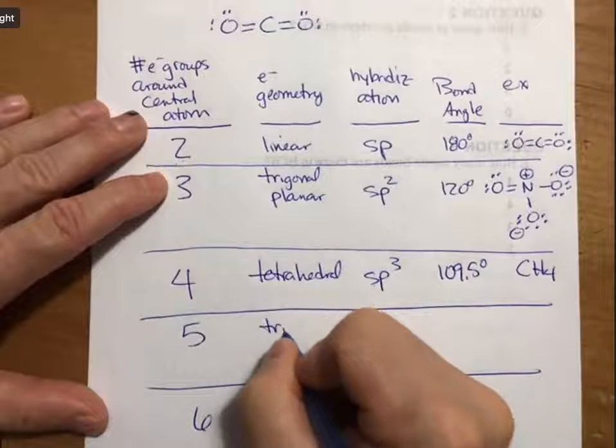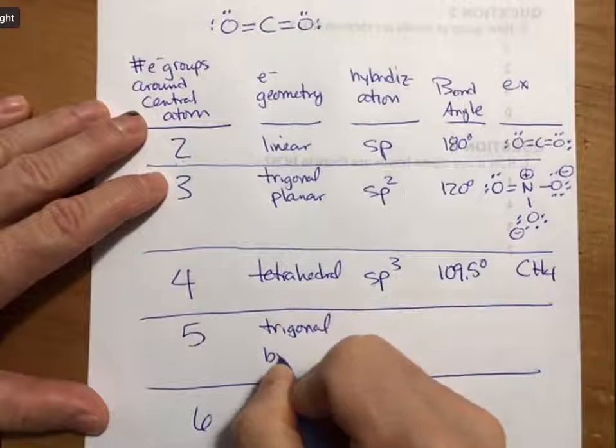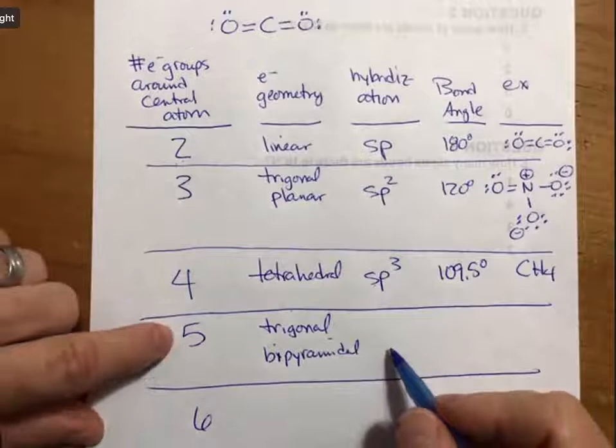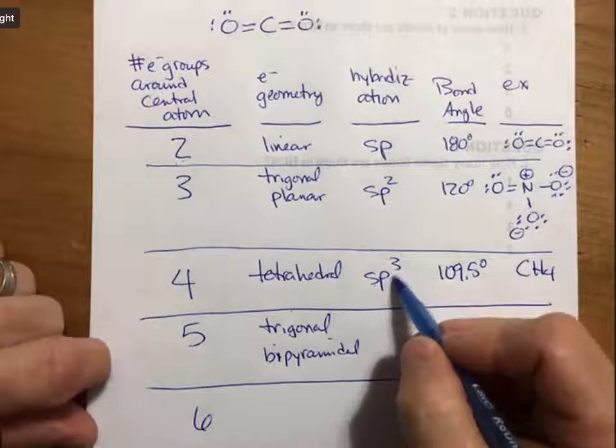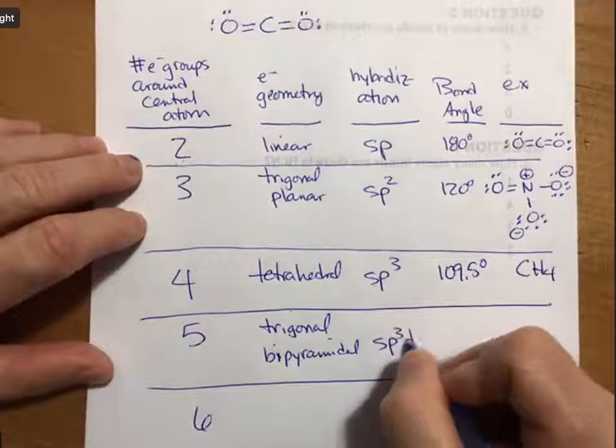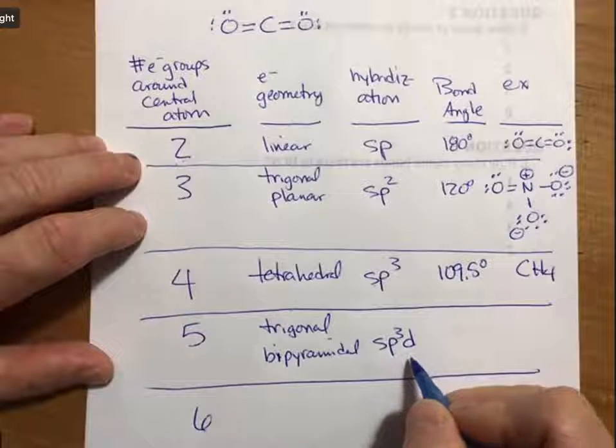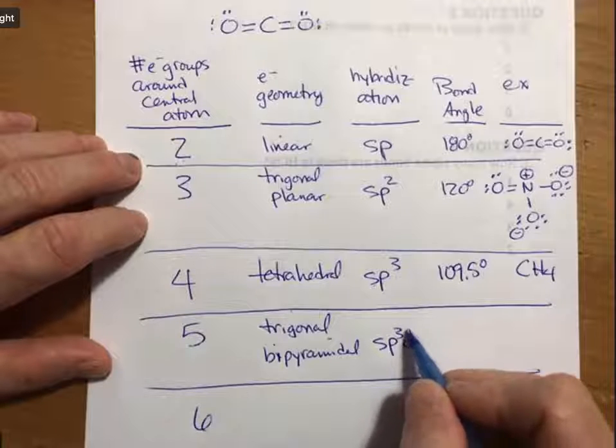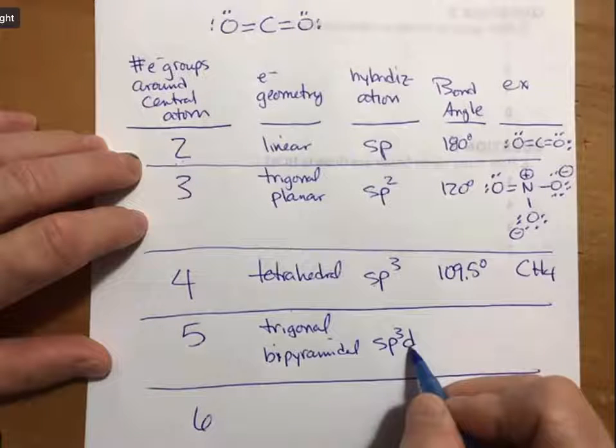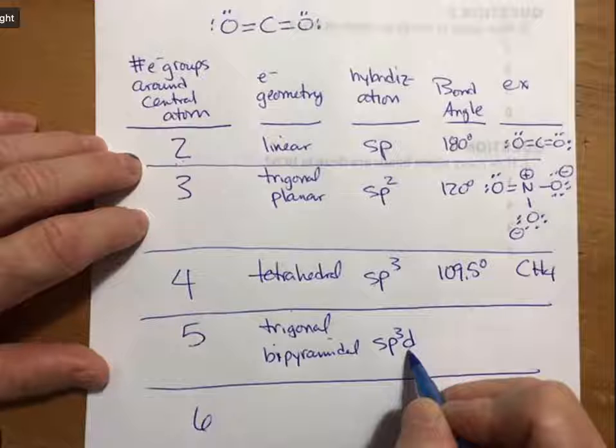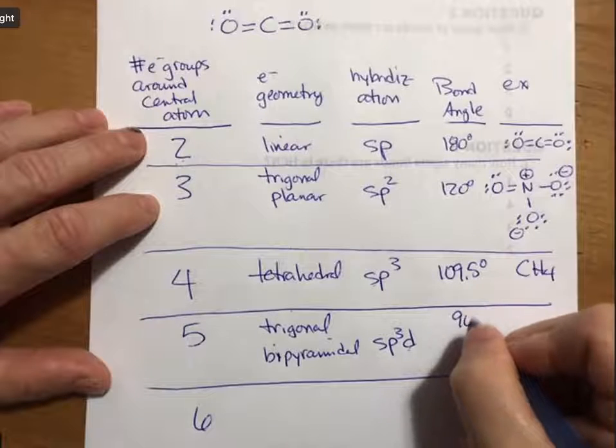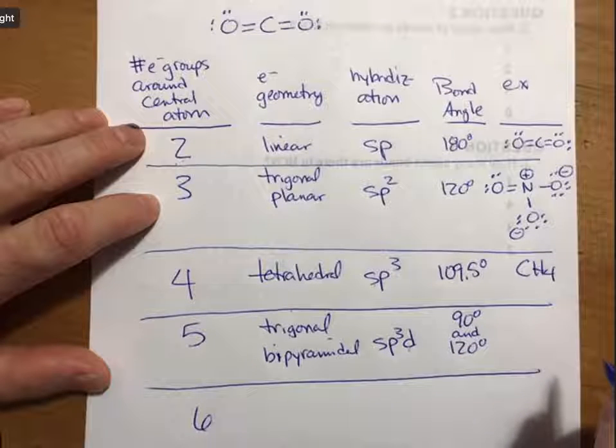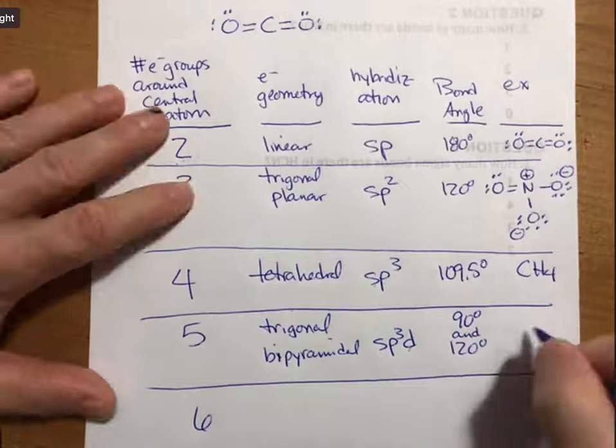There are actually five and six electron groups that we cover. Five is trigonal bipyramidal with five orbitals hybridized. Since we ran out of s's and p's, we add one of the d's. You'll remember that if you have an expanded octet, the electrons beyond eight go into the d orbitals. Here's evidence of that. The bond angles are 90 degrees and 120 degrees, and a good example is IF3.